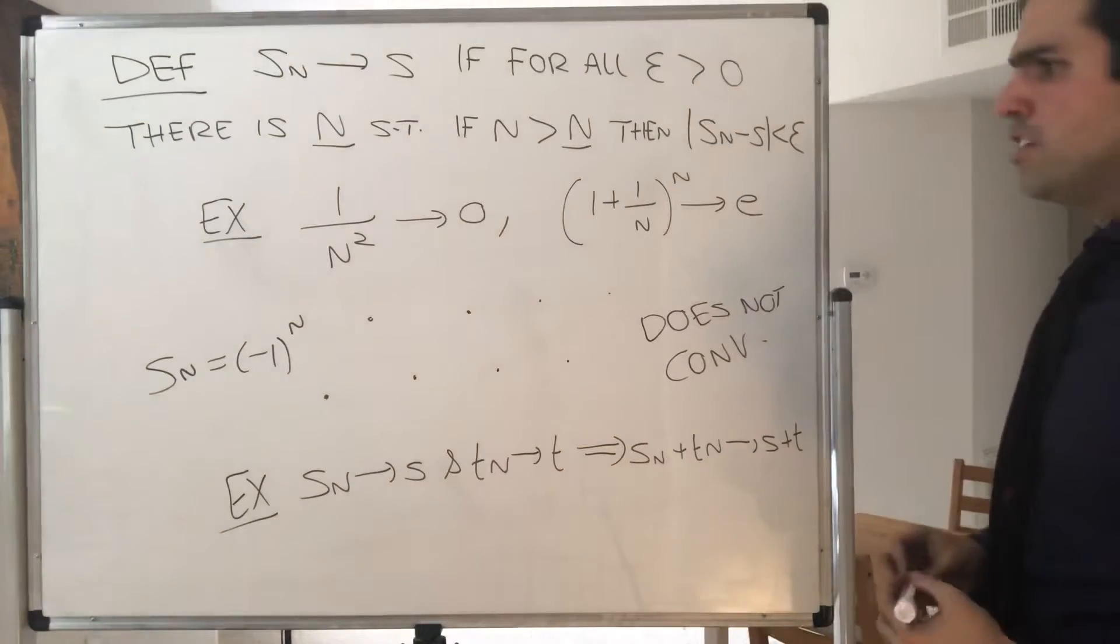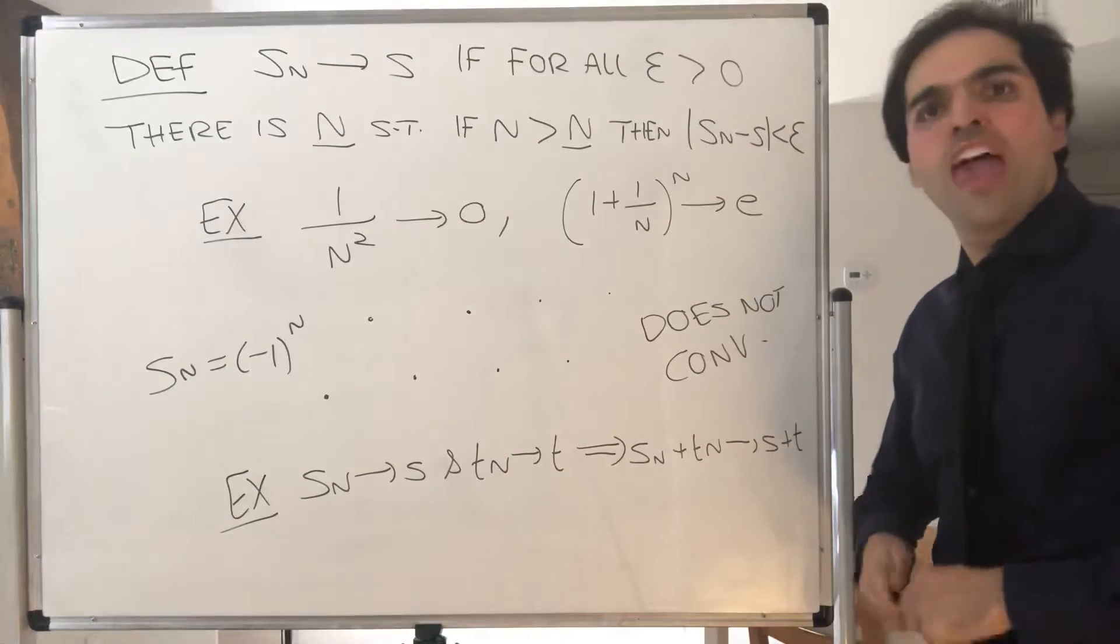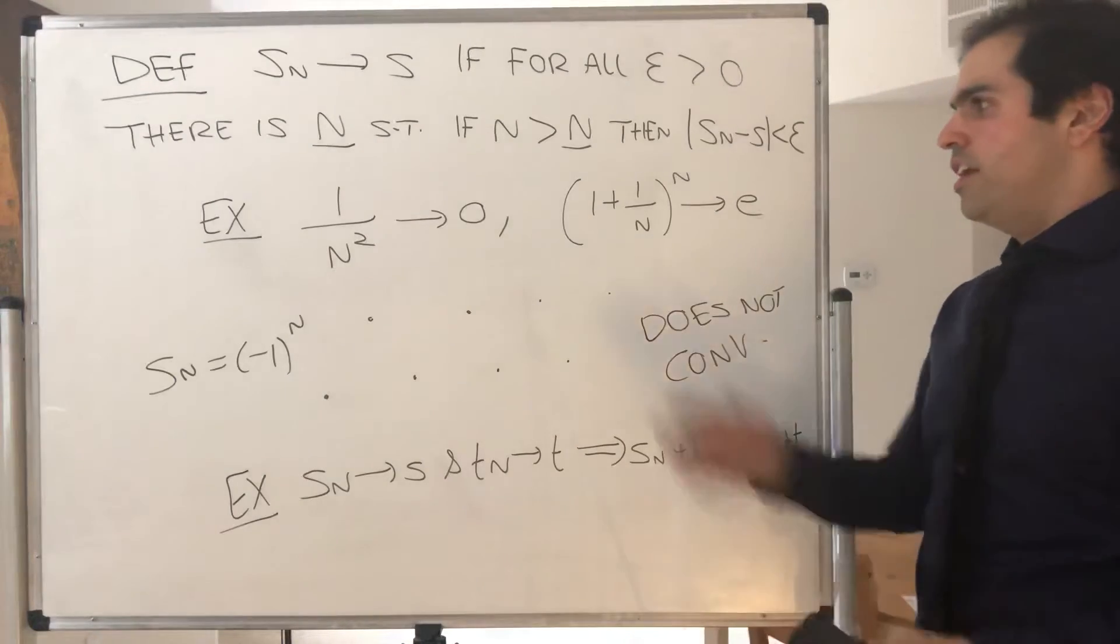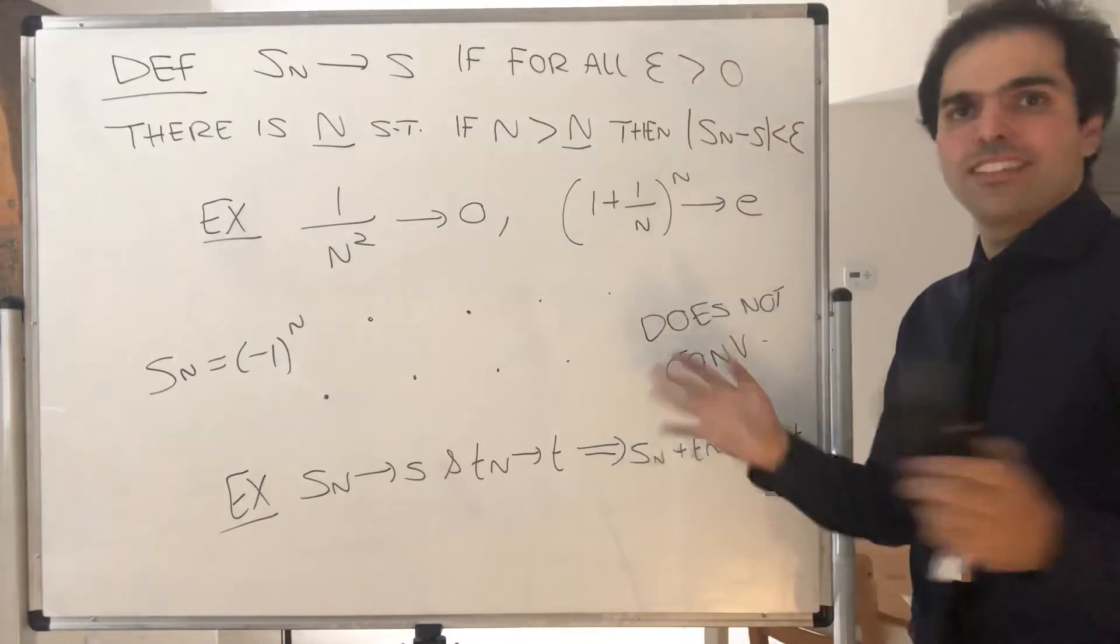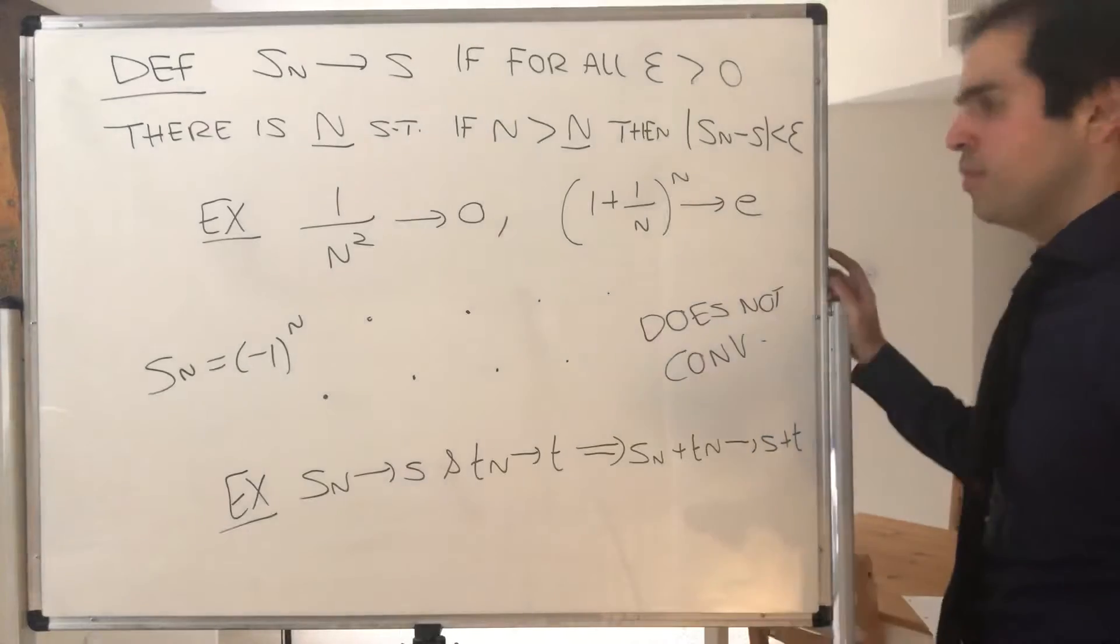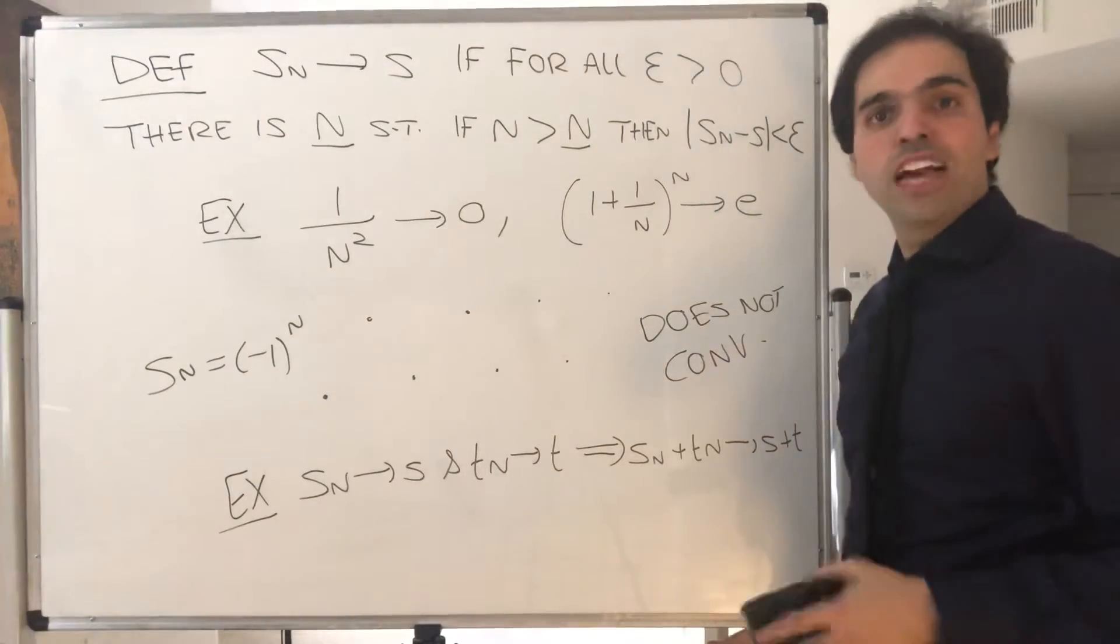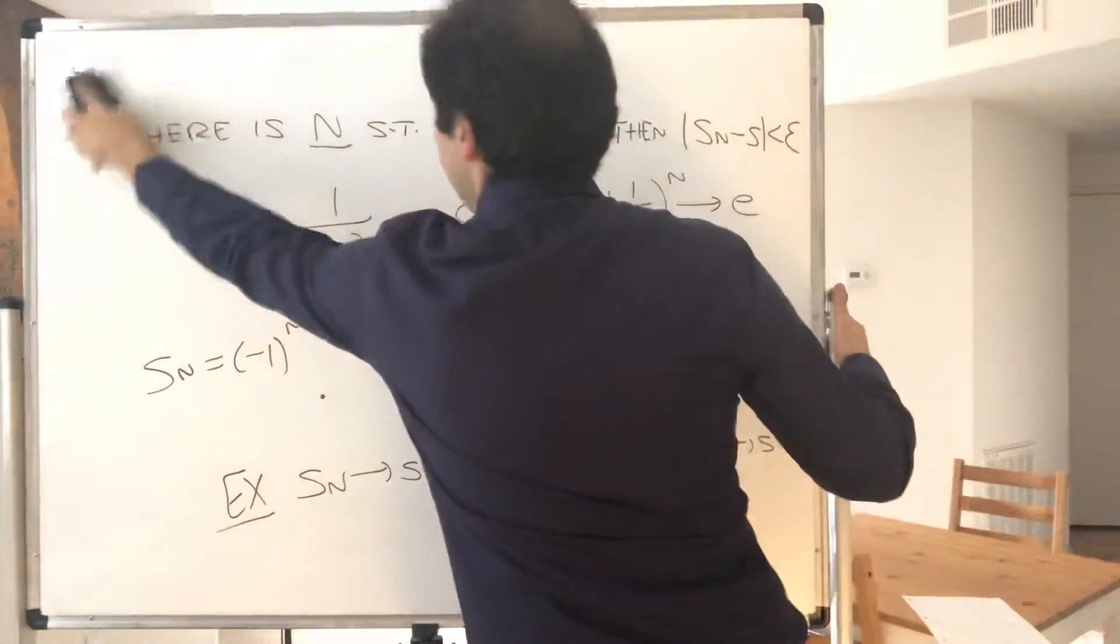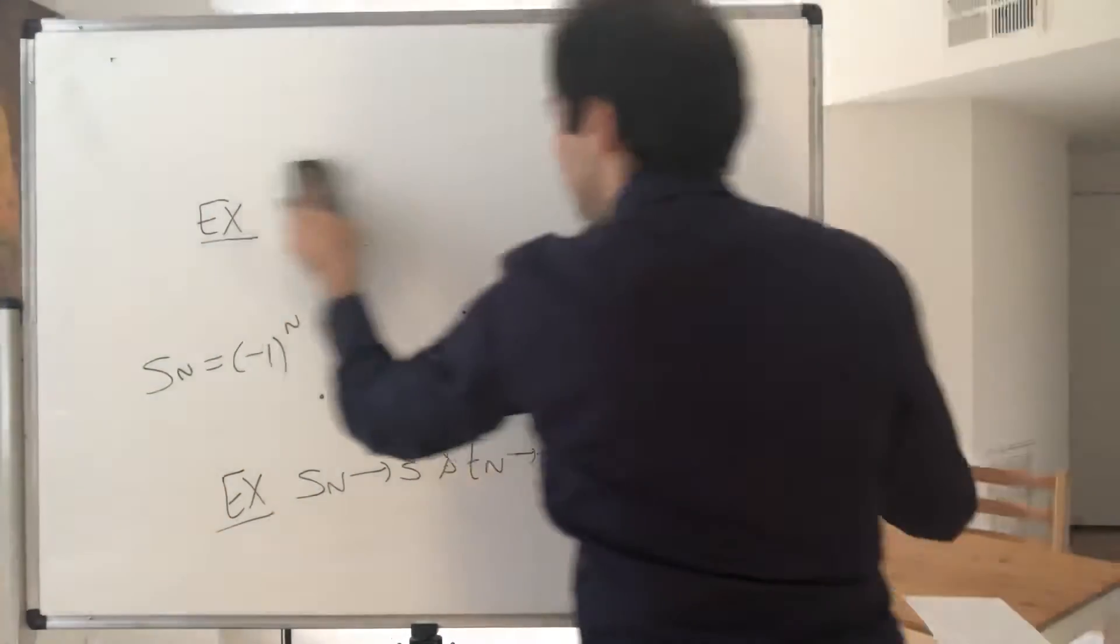Now this is all nice, but the problem is it's still very hard to show that the sequence converges. In fact, if you do more complicated examples you'll see it's impossible, so it would be nice if we had some easy tests for convergence. And in fact there are two of them that are pretty important.